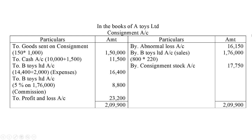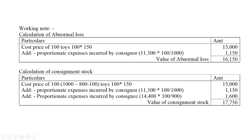In the consignment account, first entry on the debit side: goods sent on consignment — 1000 toys at Rs. 150 each equals Rs. 1,50,000. Then cash account for expenses by A Toys Limited: freight Rs. 10,000 and insurance Rs. 1,500, total Rs. 11,500. B Toys Limited account for expenses: custom duty Rs. 14,400 and go-down rent and advertisement Rs. 2,000, total Rs. 16,400.